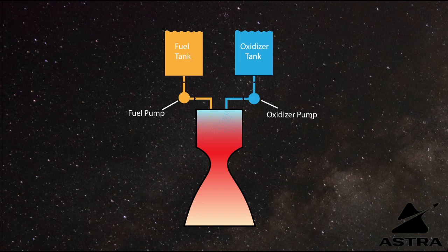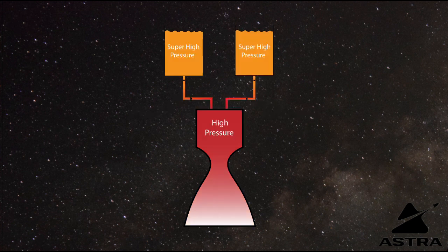One thing that should be noted about this system is that the combustion chamber pressures can get quite high, and so in order to push the liquid into that combustion chamber, we need to have a higher pressure that feeds into the combustion chamber. This usually means we either need to have a really high pressure tank that's pushing the fuel and the oxidizer out into the combustion chamber.